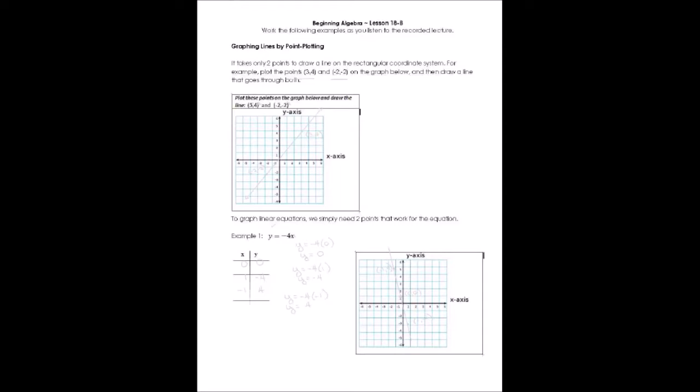So let's take and plot our first line. We're going to plot the points (3, 4) and (-2, -2) on the graph below, and then we're going to draw the line that goes through both of those points.